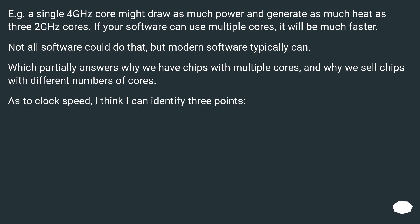Part of that was to use multiple cores over raw clock speed. For example, a single 4 GHz core might draw as much power and generate as much heat as three 2 GHz cores. If your software can use multiple cores it will be much faster. Not all software could do that, but modern software typically can. This partially answers why we have chips with multiple cores, and why we sell chips with different numbers of cores.